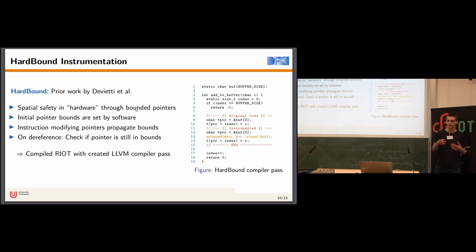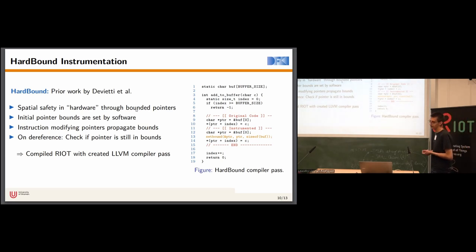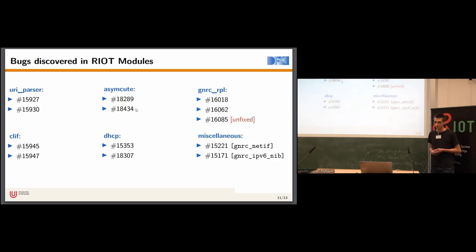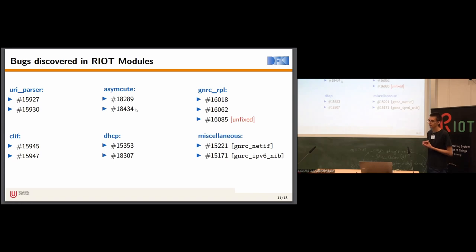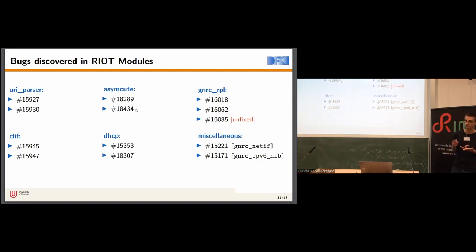We have employed this for testing RIOT software, compiling RIOT with our LLVM-based HardBound compiler pass, and combining it with our exploration strategies — both network peripheral injection and manual test harnesses. As part of these tests, we found roughly 15 previously unknown bugs in different RIOT modules: the URI parser, emCute MQTT, the MQTT-SN implementation, the RPL implementation, the CoAP implementation, the DHCP implementation, and several others along the way.